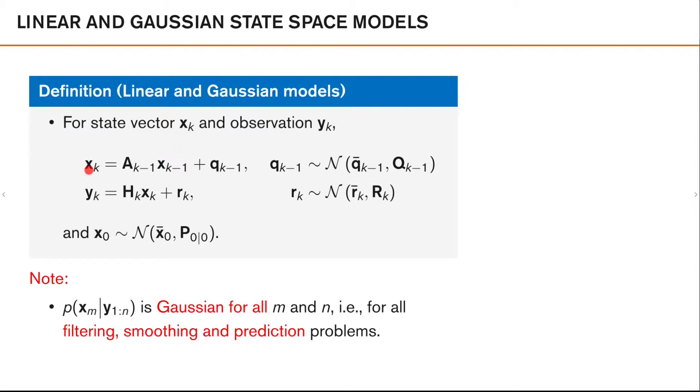we see that we both have a linear process model and a linear measurement model. As both of these models just scale the state vector by either a so-called transition matrix, A_k, in the process model case,